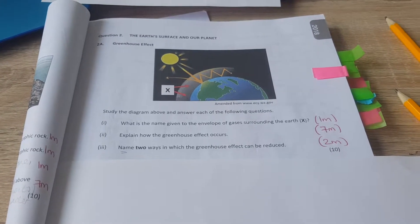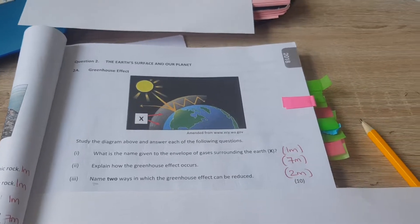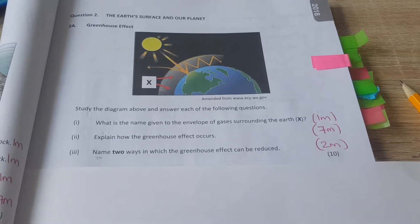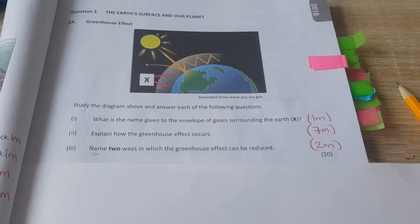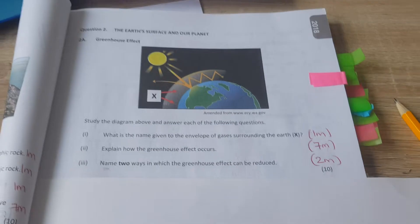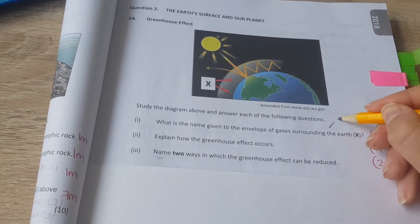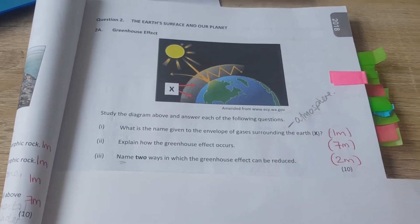This question is another long question, question 2A from the 2018 paper. It's got to do with energy as well. Study the diagram above and answer each of the following questions. What's the name given to the envelope of gases around the Earth marked X? That is one mark. This is actually called the atmosphere. One mark for that.